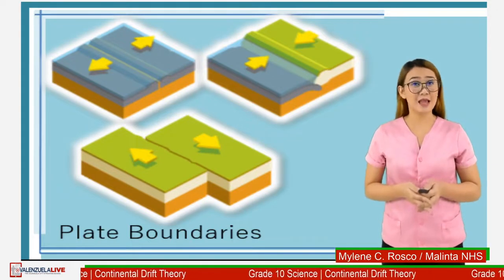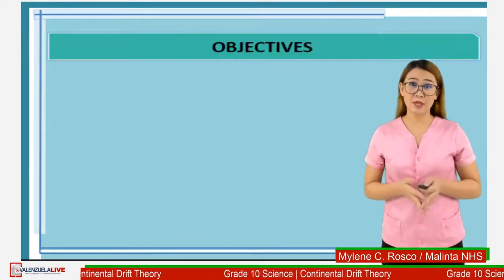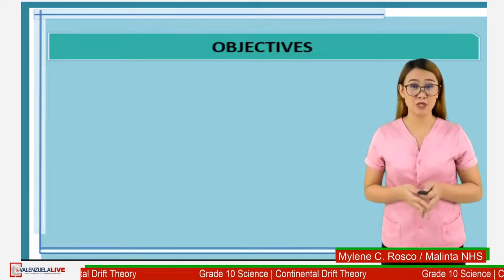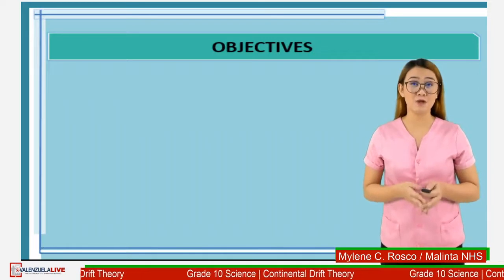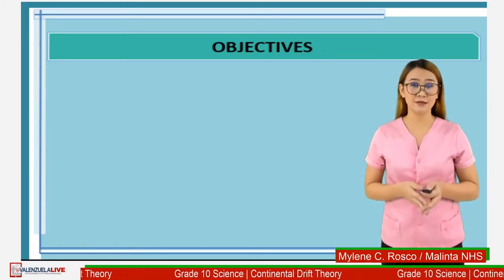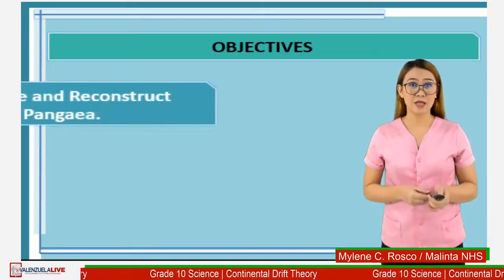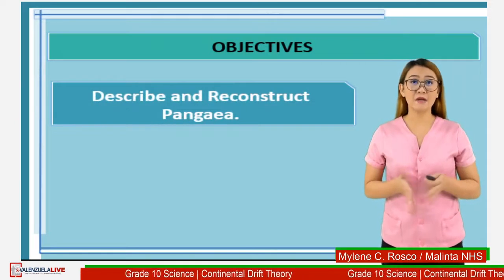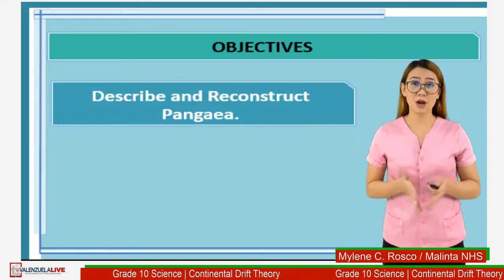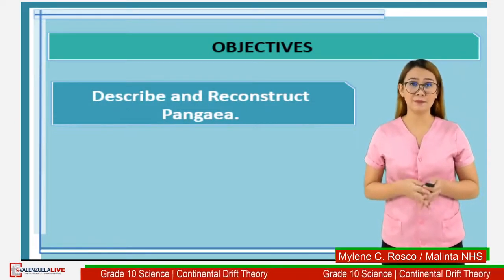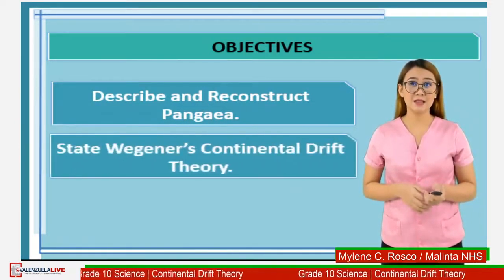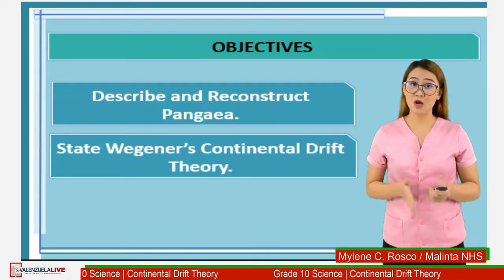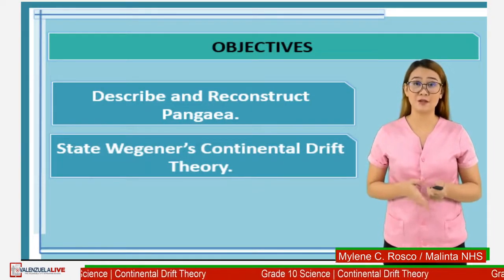At the end of my lesson, you are expected to attain the following objectives. First, you are expected to describe and reconstruct Pangea. Second, state Wegener's continental drift theory.